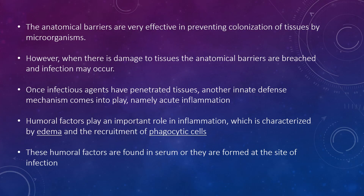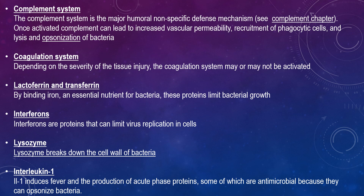Anatomical barriers are very effective in preventing colonisation of tissues by microorganisms. However, when there is damage to tissues and anatomical barriers are breached, infection can occur. Once infectious agents have penetrated tissues, another innate immune mechanism comes into play, namely acute inflammation. Humoral factors play a role in inflammation, which is characterised by oedema and the recruitment of phagocytic cells. These humoral factors are found in serum or are formed at the site of infection, and this represents a major humoral non-specific defence mechanism.